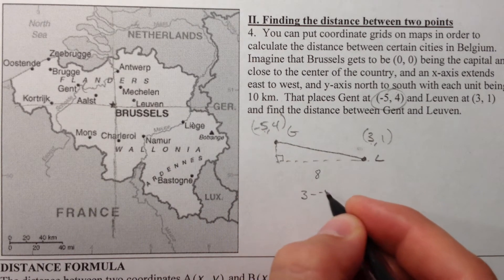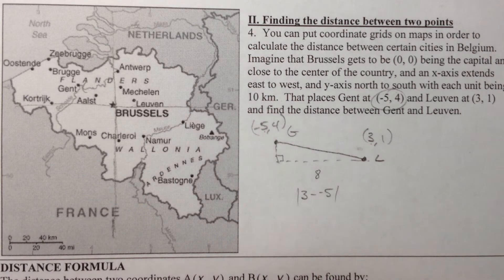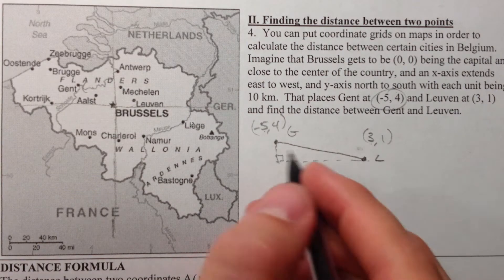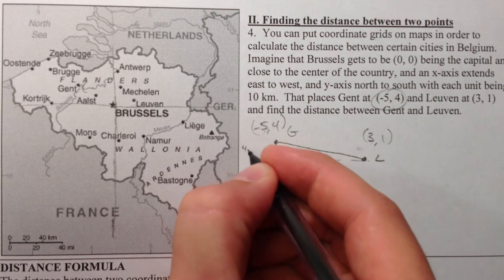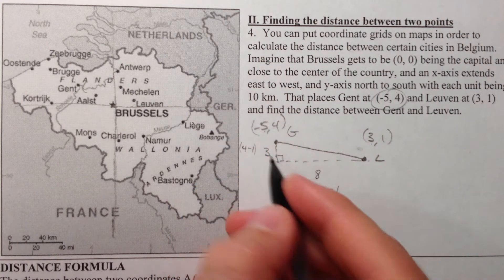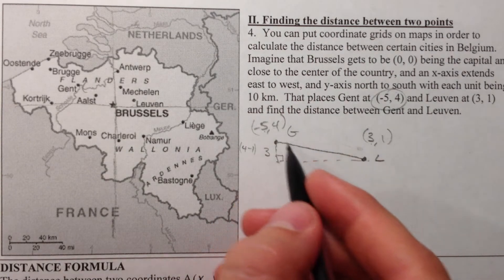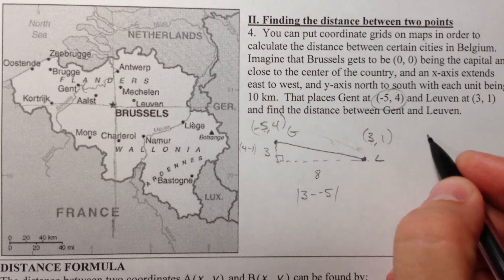3 minus a negative 5, right? In a sense, it's the absolute value of it. And you can do it either way. And then 4 minus 1, this total change, is 3. And so this side of the triangle is 3, this side of the triangle is 8. And if we want to find this side of the triangle, we have to use something called Pythagorean theorem.